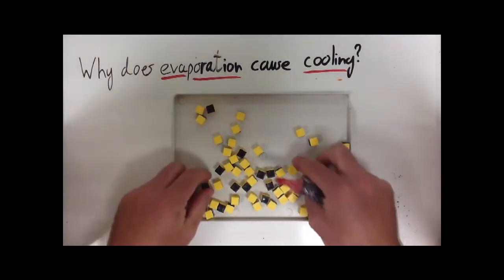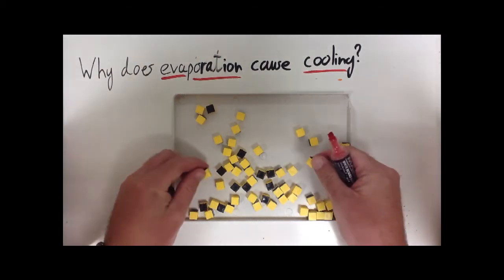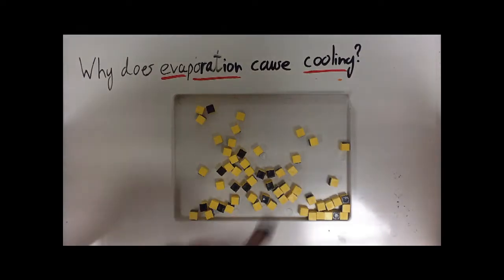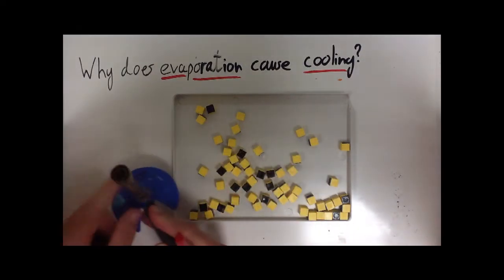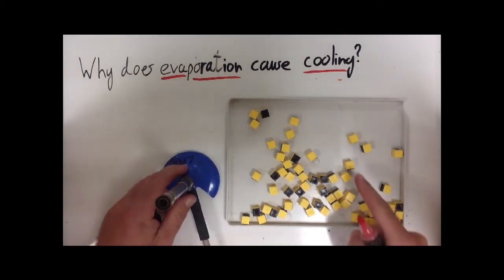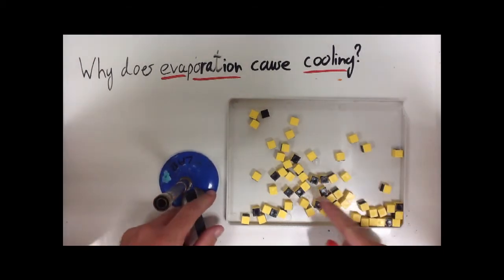Here I have a little dish of water with these little dice here representing water particles or water molecules. What I'm going to do is I'm going to add some heat using my Bunsen burner. Although I could equally just leave it in the sun and it would still evaporate. And that's going to increase the kinetic energy of the particles.